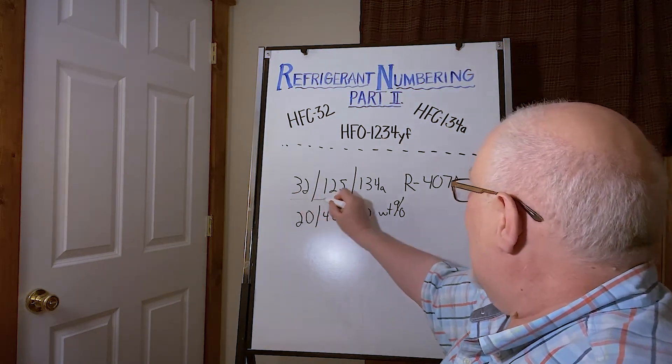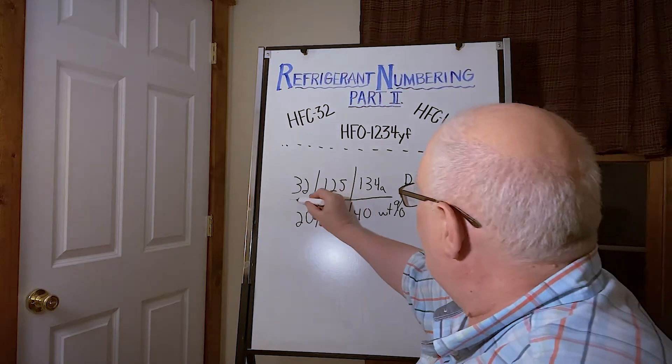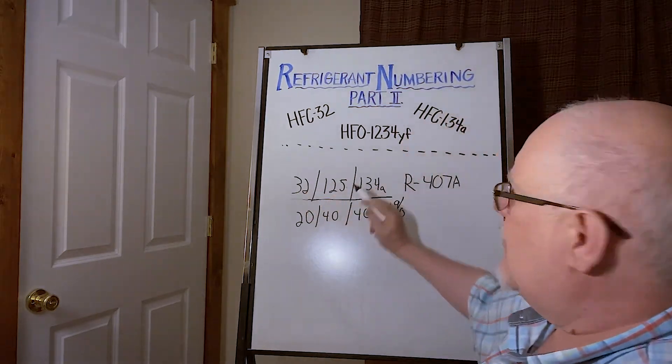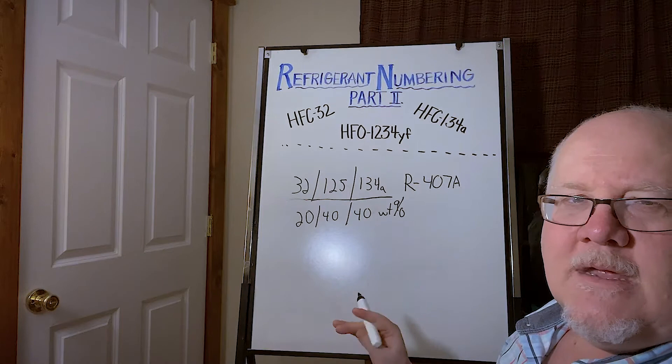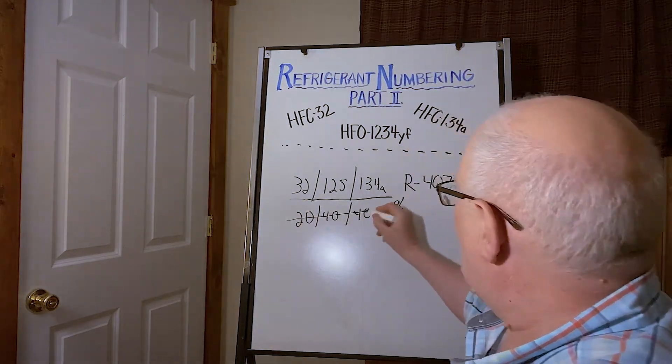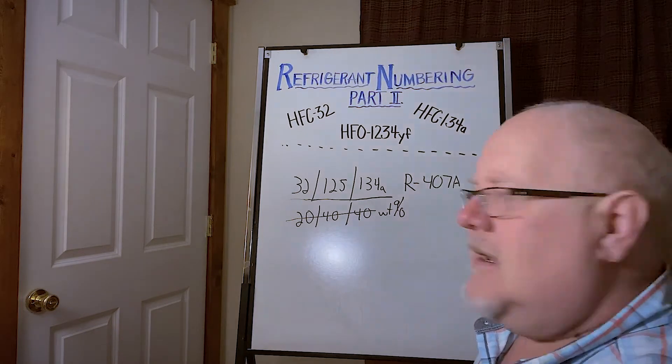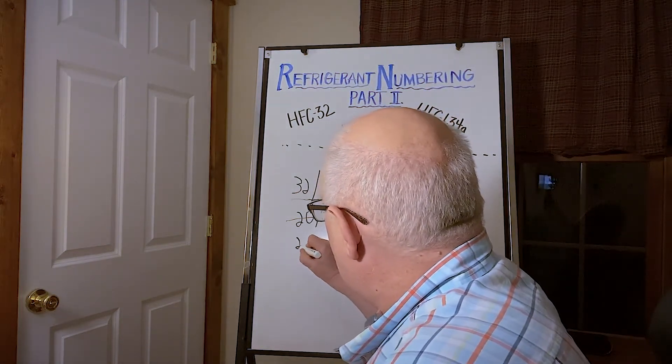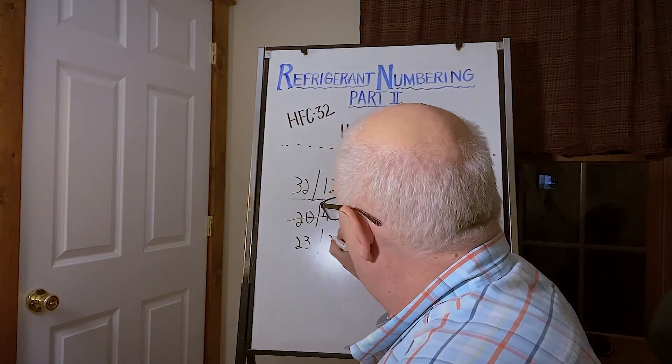So what happens is now any time a new refrigerant is developed and it uses these same three components, it's going to be assigned a 407 designation. So instead of saying we wanted to have 20, 40, 40 weight percent, someone came along and said, I think 23, 25...